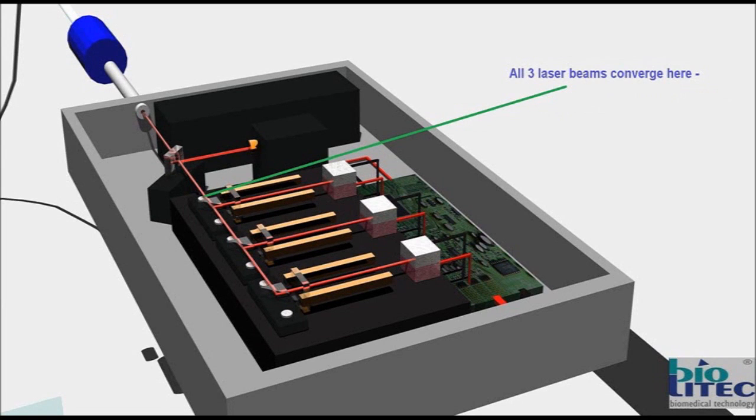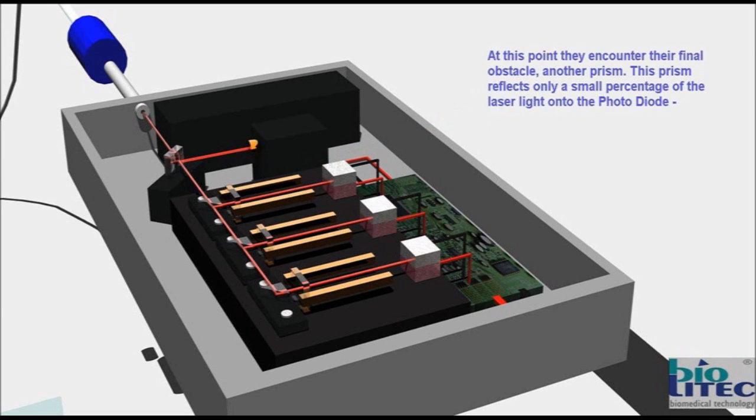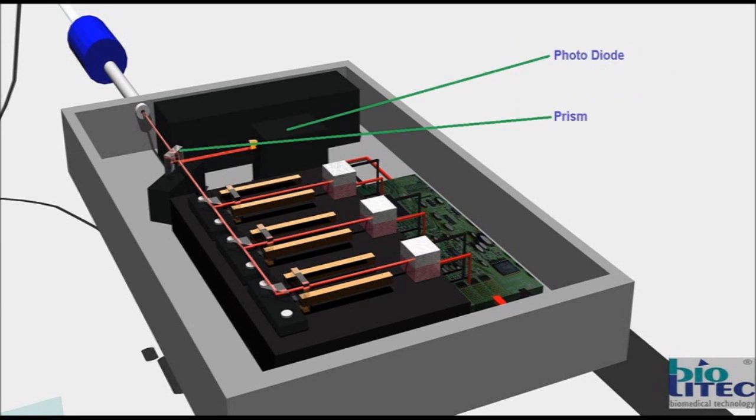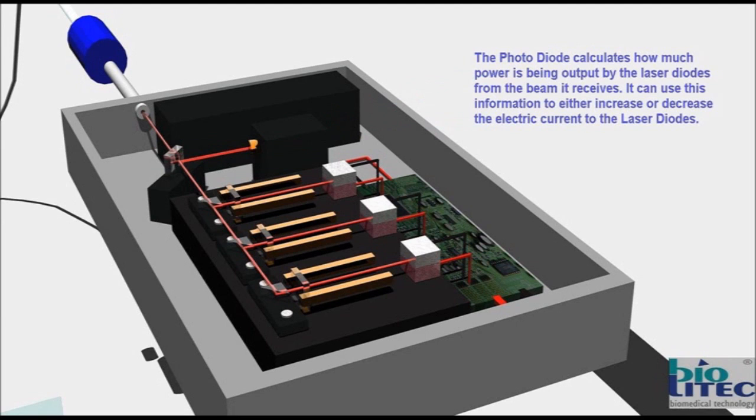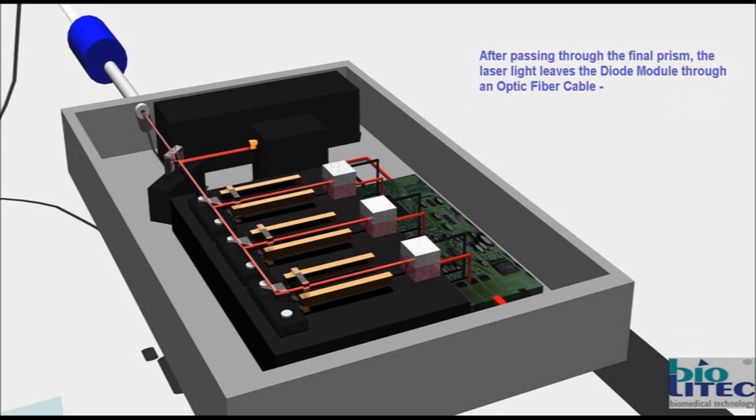All three beams converge here. At this point they encounter the final obstacle, another prism. This prism reflects only a small percentage of the laser light onto the photodiode. The photodiode calculates how much power is being outputted by the laser diodes from the beam it receives. It can use this information to either increase or decrease the electric current of the laser diodes.